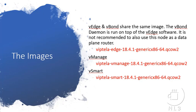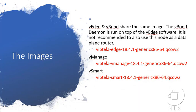The images that you'll need are the vEdge and vBond — these two share the same image you'll find in the Cisco download section. The vBond daemon is run on top of the vEdge software, and it is not recommended to also use this node as a data plane router. I've listed the exact image files on the screen. You will also need some routing images to load into your lab to set up a mock ISP or multiple mock ISP scenarios for your SD-WAN lab. We'll also need a management desktop image to run as a certificate authority for the environment. The reason we're downloading this file format is because the emulator I'm using and recommending runs Linux KVM as a hypervisor.